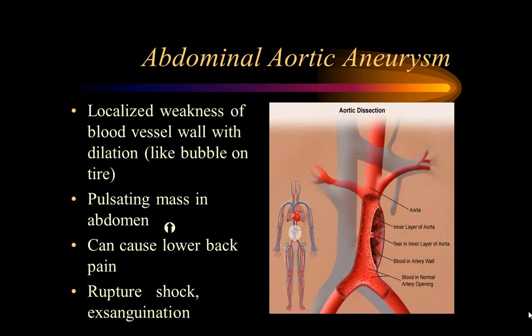Abdominal aortic aneurysms (AAA): the aortic wall has three layers. The intima begins to break down, blood enters between the intimal and medial layers, and ultimately ruptures through the outer layer. A pulsatile abdominal mass may be visible. The biggest problem is rupture leading to rapid exsanguination and shock.